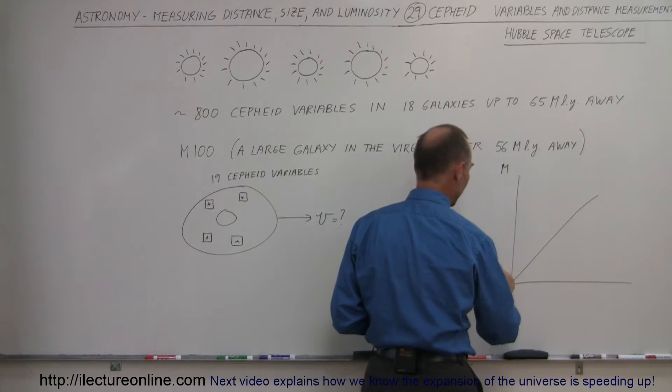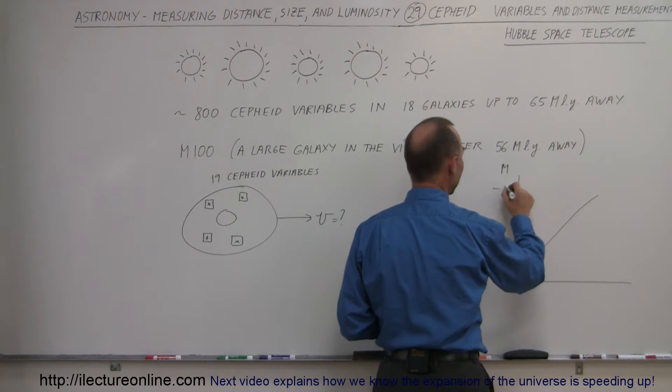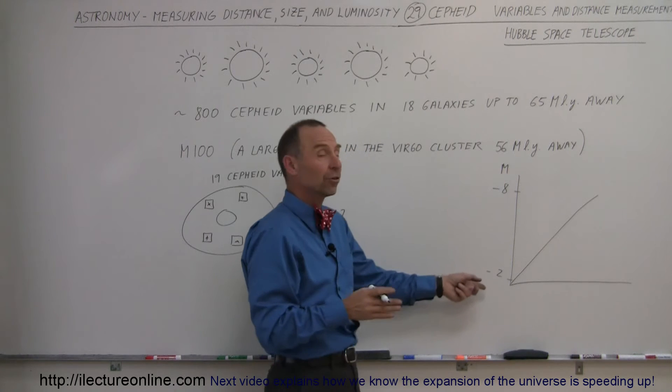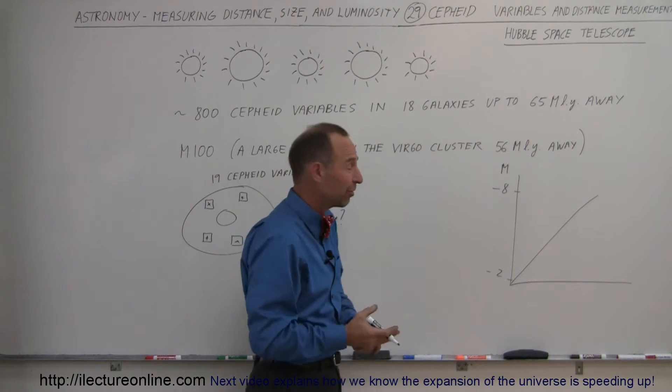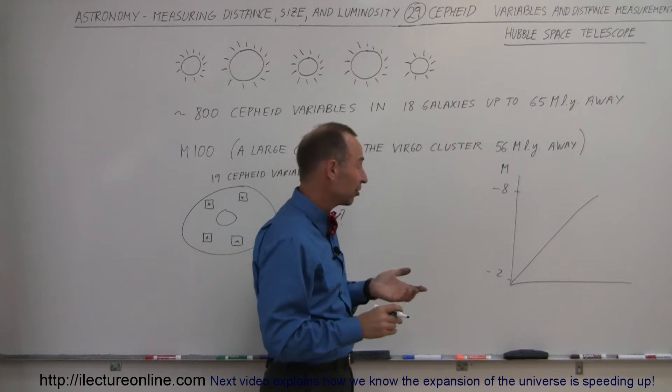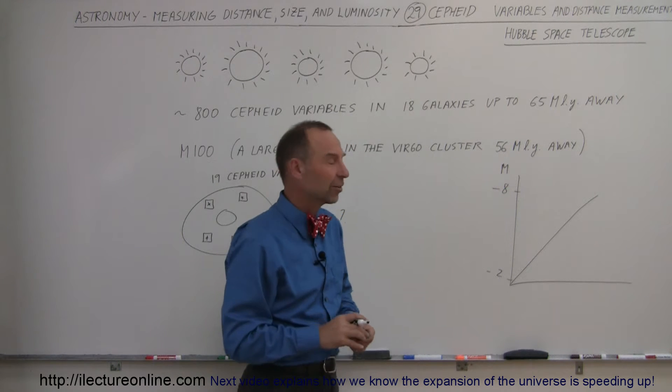So Cepheid variables vary from minus 2 to minus 8 as their absolute magnitude. That's pretty bright because compared to the sun, our sun is like almost a plus 5. These are stars that are as much as 10,000 or more times as bright as the sun.